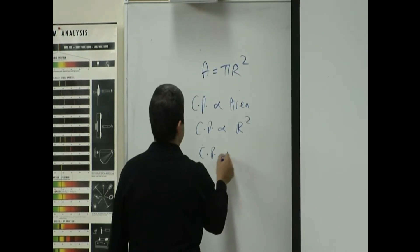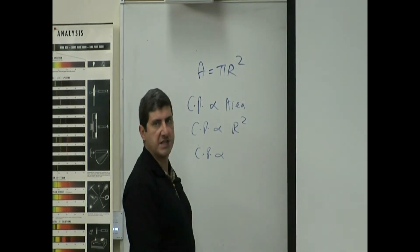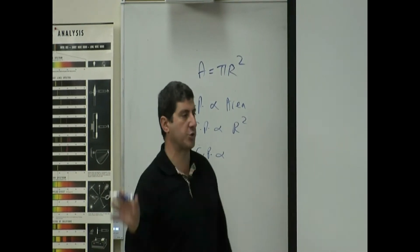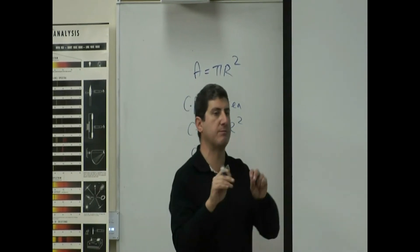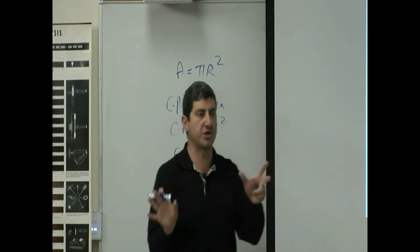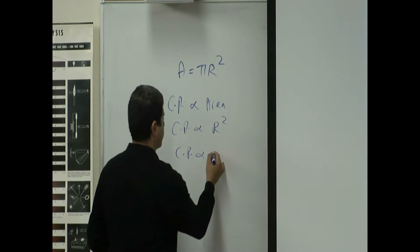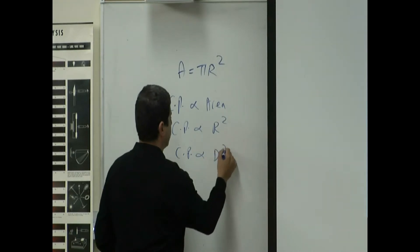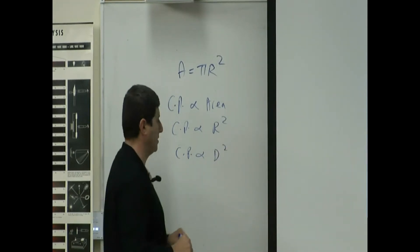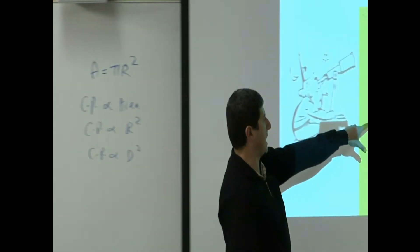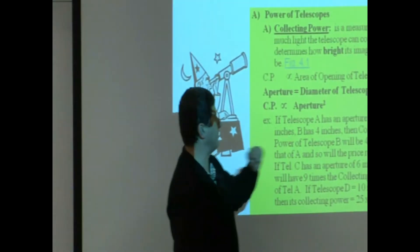The radius is also proportional to the diameter. So the collecting power is proportional to diameter squared, and therefore the aperture is the diameter.